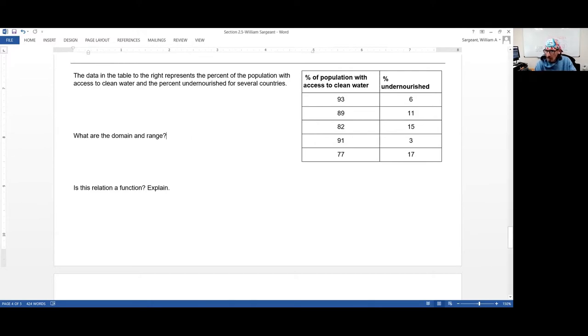So we're asked what are the domain range on this and whether or not the relation is a function. Our domain would be, we've got finitely many values, so I'm going to use the listing or roster method, 93, 89, 82, 91, and 77. That set is the domain. And the range is 6, 11, 15, 3, and 17.